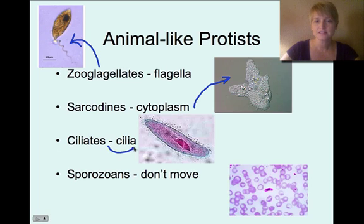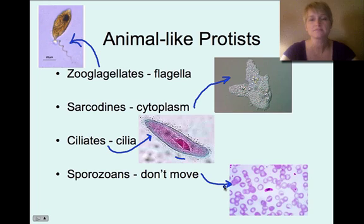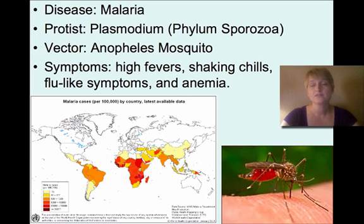Ciliates have cilia — you can see these little hair-like structures along a paramecium. Then there are sporozoans, which don't have a mechanism to move. Sporozoans are often carried in the bloodstream, so they use other organisms to move them around.